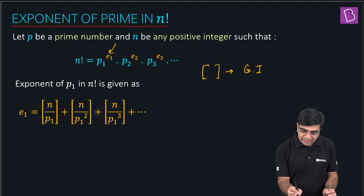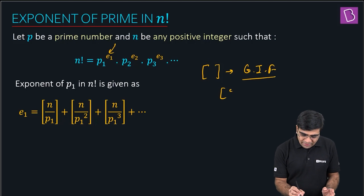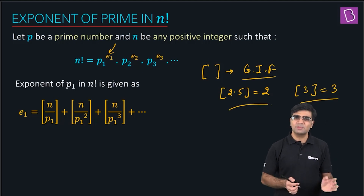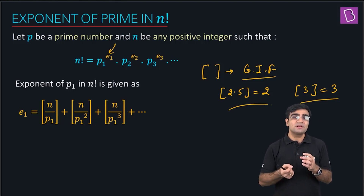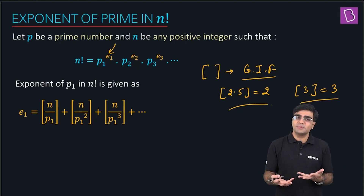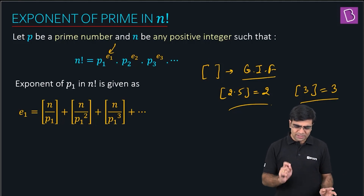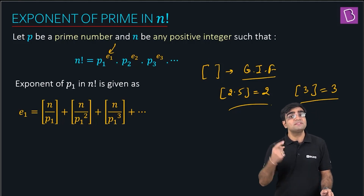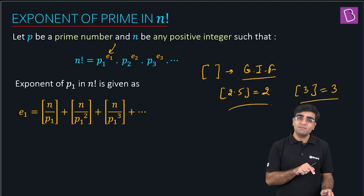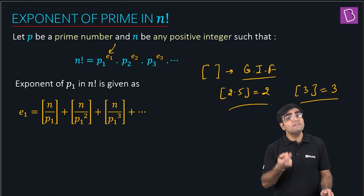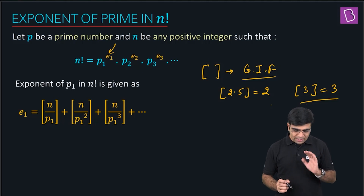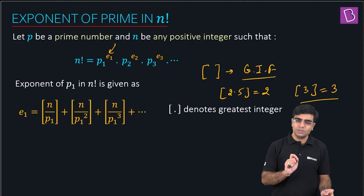The formula is: e1 = ⌊n/p1⌋ + ⌊n/p1²⌋ + ⌊n/p1³⌋ + ... where the bracket denotes the greatest integer function (GIF). Recall that ⌊2.5⌋ = 2 and ⌊3⌋ = 3 — it is the greatest integer less than or equal to that number. So in our formula, ⌊n/p1⌋ is the first term, ⌊n/p1²⌋ is the second, ⌊n/p1³⌋ the third, and so on.